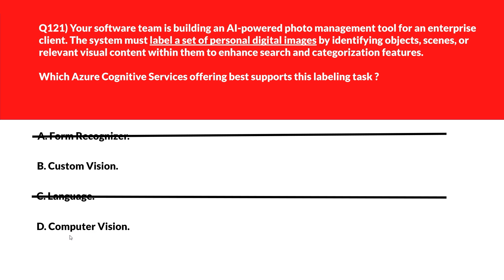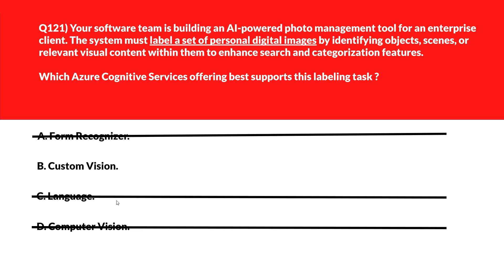Option D is Computer Vision. Computer Vision extracts general tags and descriptions but doesn't support training a labeling model customized for photo datasets — incorrect. We'll lock option B, Custom Vision, as the right answer.